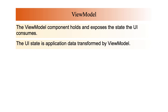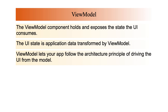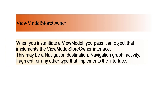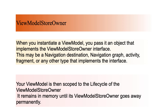The ViewModel component holds and exposes the state; the UI consumes the UI state, which is application data transformed by a ViewModel. ViewModel lets your app follow the architecture principle of driving the UI from the model. ViewModel stores application-related data that is not destroyed when the activity is destroyed and recreated by the Android framework. Unlike the activity instance, ViewModel objects are not destroyed. When you instantiate a ViewModel, you pass it an object that implements the ViewModelStoreOwner interface — this may be a navigation destination, navigation graph, activity, fragment, or any other type that implements the interface. Your ViewModel is then scoped to the lifecycle of that ViewModelStoreOwner, remaining in memory until its owner goes away permanently.